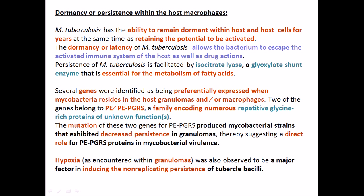Hypoxia was also observed to be a major factor in inducing the non-replicating persistence of tubercle bacteria. Hypoxia plays a major role in inducing persistence once infection is established for a longer period of time, and the bacteria can easily survive under those conditions using proteins like NarGY. So that's about the uniqueness of Mycobacterium — it's simply a race between our immune system and mycobacteria, and it's the mycobacteria that tend to win because they know our immune system very well and modify themselves accordingly.